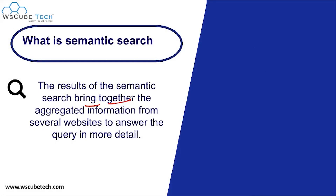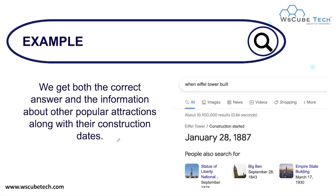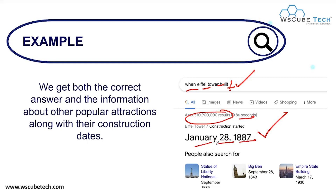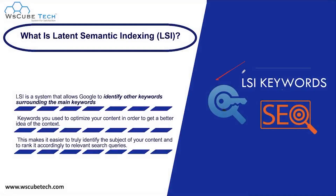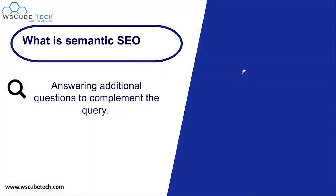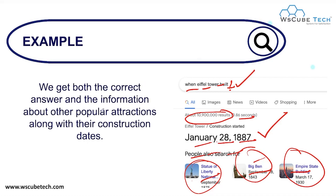The result of semantic search brings together aggregate information from several websites just to answer the query in more detail. For example, if I simply enter one query on Google, corresponding to that particular keyword we can see this many results. Google shows me an exact answer without opening any particular site, and similarly also shows related keywords — the best possible keywords which people are also searching for.